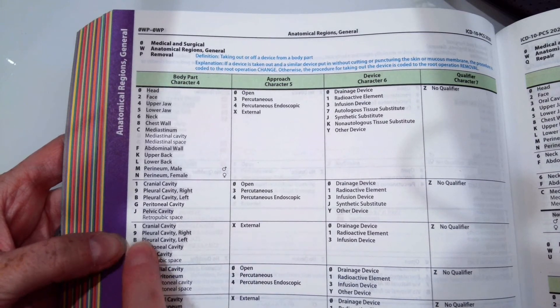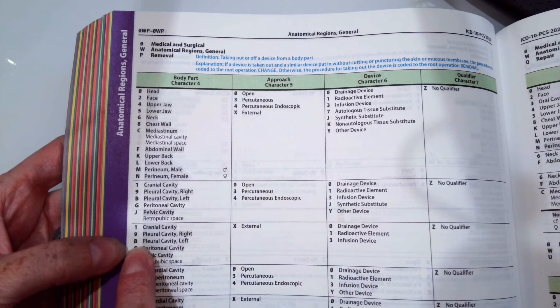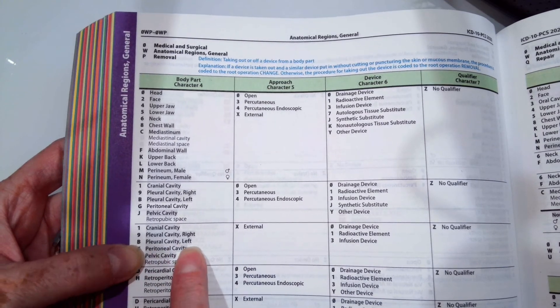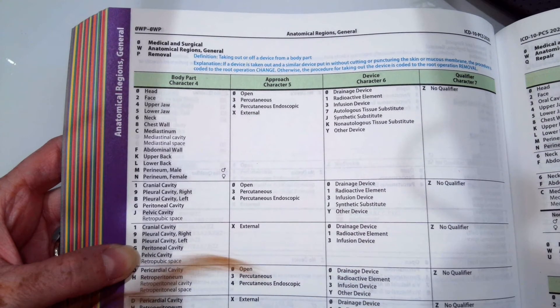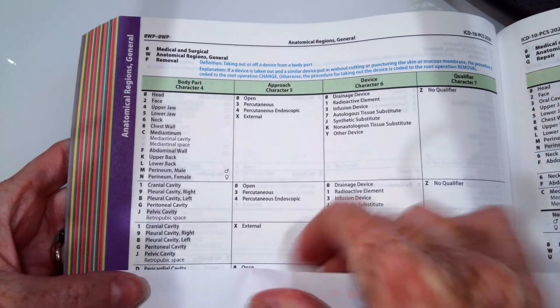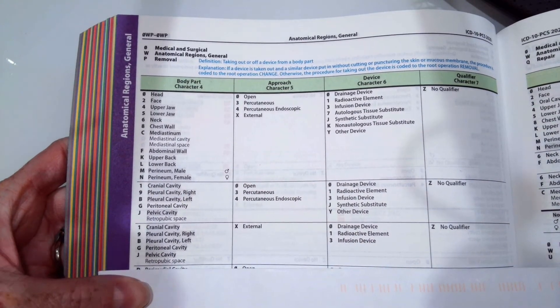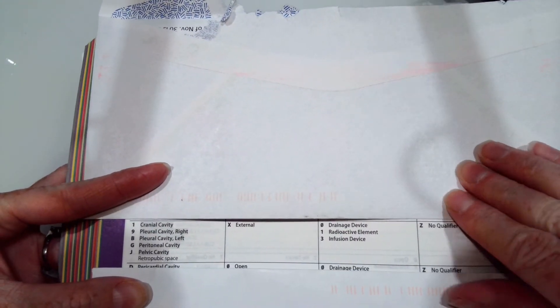So we know we're in the second row where our character B for pleural cavity left is. And again, you have to stay in that same row. So we have to stay right here. We cannot go up or down. You have to stay in the same lane, if you would like to call it that.